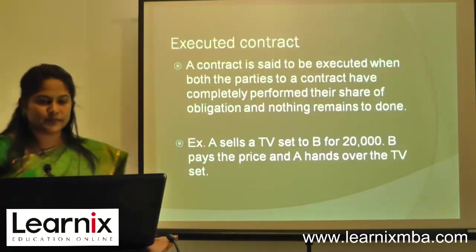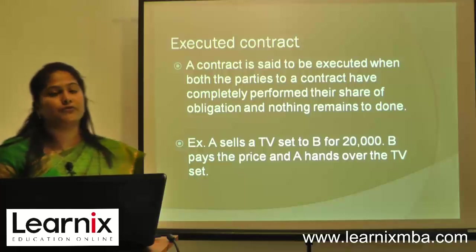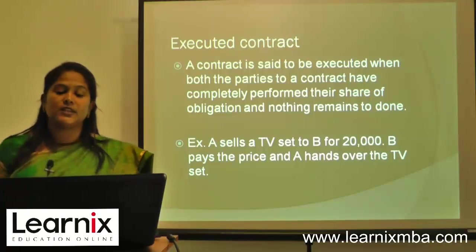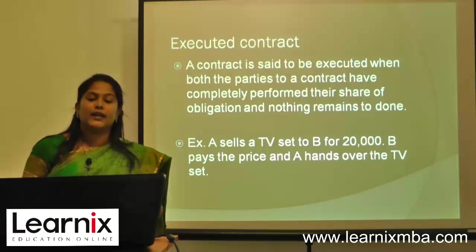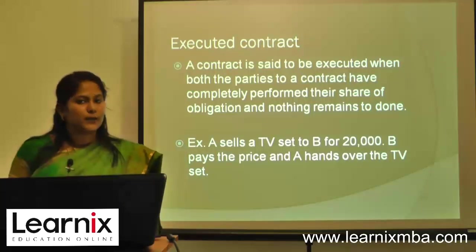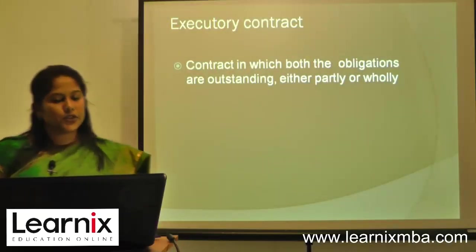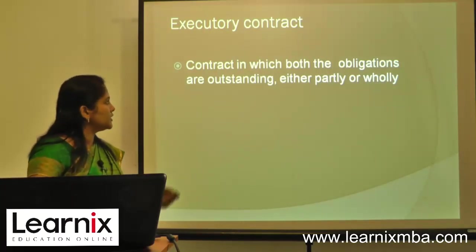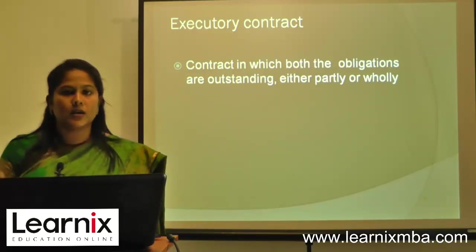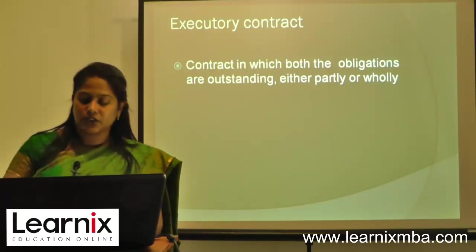Classification by performance: contracts are classified into executed and executory. An executed contract is one where both parties have completely performed their obligations and nothing remains to be done — for example, A sells a TV to B for twenty thousand rupees, the price is paid and the TV is handed over. An executory contract is one where obligations are still outstanding, either partly or wholly — for example, if payment is made in advance but goods are yet to be received.